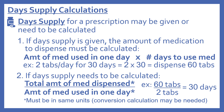Day supply for a prescription may be given or it may need to be calculated. If the day supply is given, the amount of medication to dispense must be calculated. This is done by taking the amount of medication used in one day and multiplying it by the number of days to use the medication. These have to be in the same units, and this is where the conversion calculations may be needed.